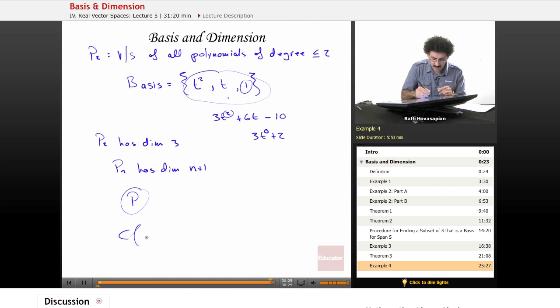And the other one is the space of continuous functions on the real line. So the space of continuous functions, you'll see it represented like this, from negative infinity to infinity. It's defined the entire real line.